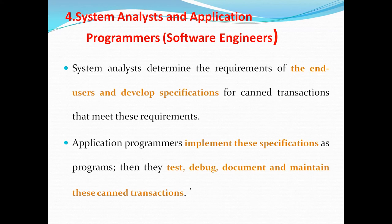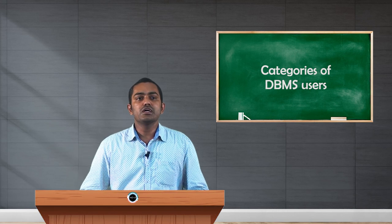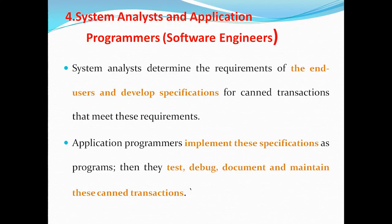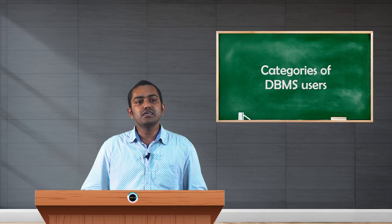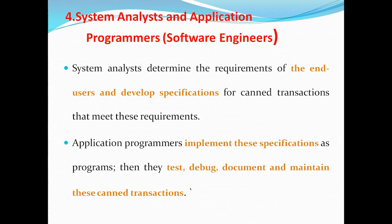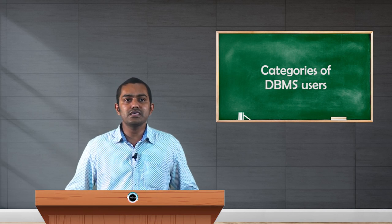The last type of database user is system analysts and application programmers. These are those who want to design the database. We discussed database administrator, database designers, and end users, but before all of those, someone needs to create the applications. These users access the database to implement specifications — whatever specifications they receive from users, they access the database accordingly to represent the data to the user. Their tasks include testing, debugging, documenting, and maintaining these canned transactions. Those who perform these transactions are called system analysts and application programmers. So we have four types of database users: database administrator, database designers, end users, and system analysts and application programmers.